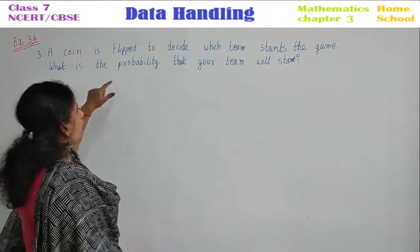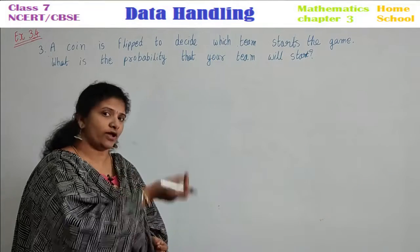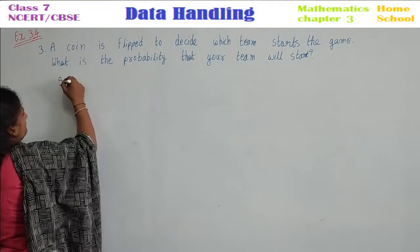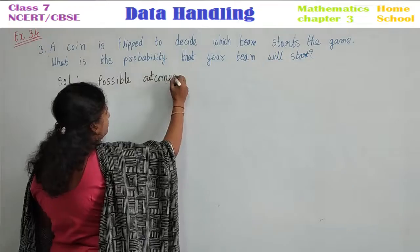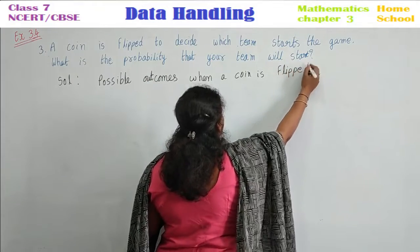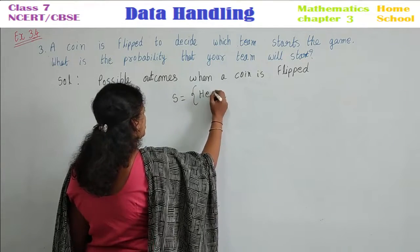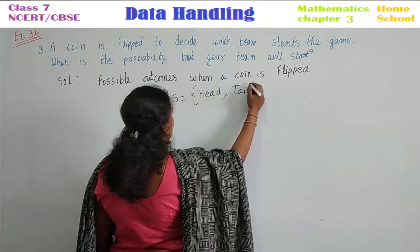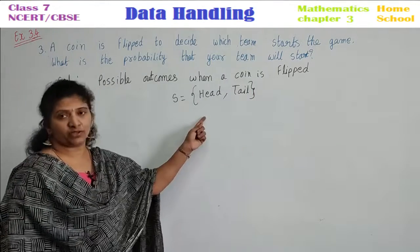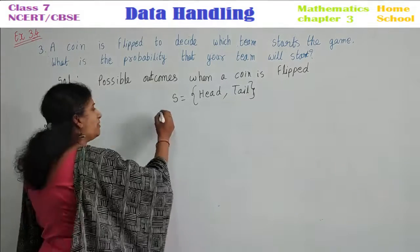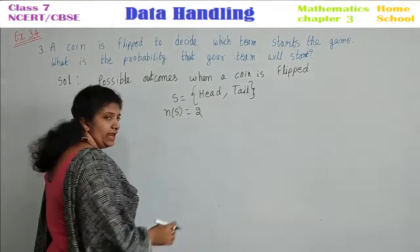Last problem in this chapter, third one: A coin is flipped to decide which team starts the game. What is the probability that your team will start? When a coin is tossed, what are all the possible outcomes? Sample space S equals head or tail — you represent that with flower brackets. How many outcomes? N of S equals two.